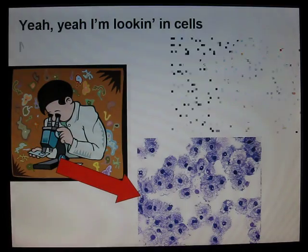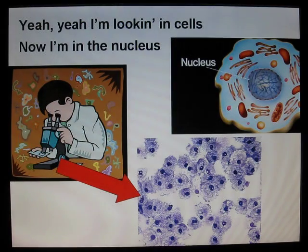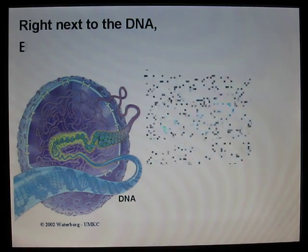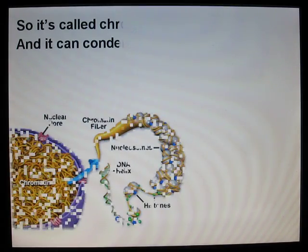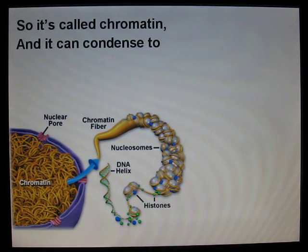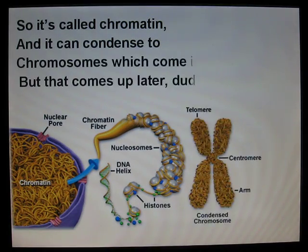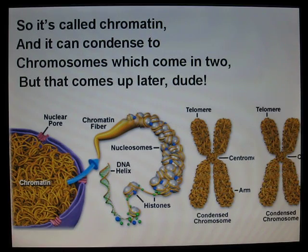Yeah, yeah, I'm looking in cells, now I'm in the nucleus, right next to the DNA, but it's all in a haze, so it's called chromatin, and it can condense to chromosomes as well, but that comes later too.